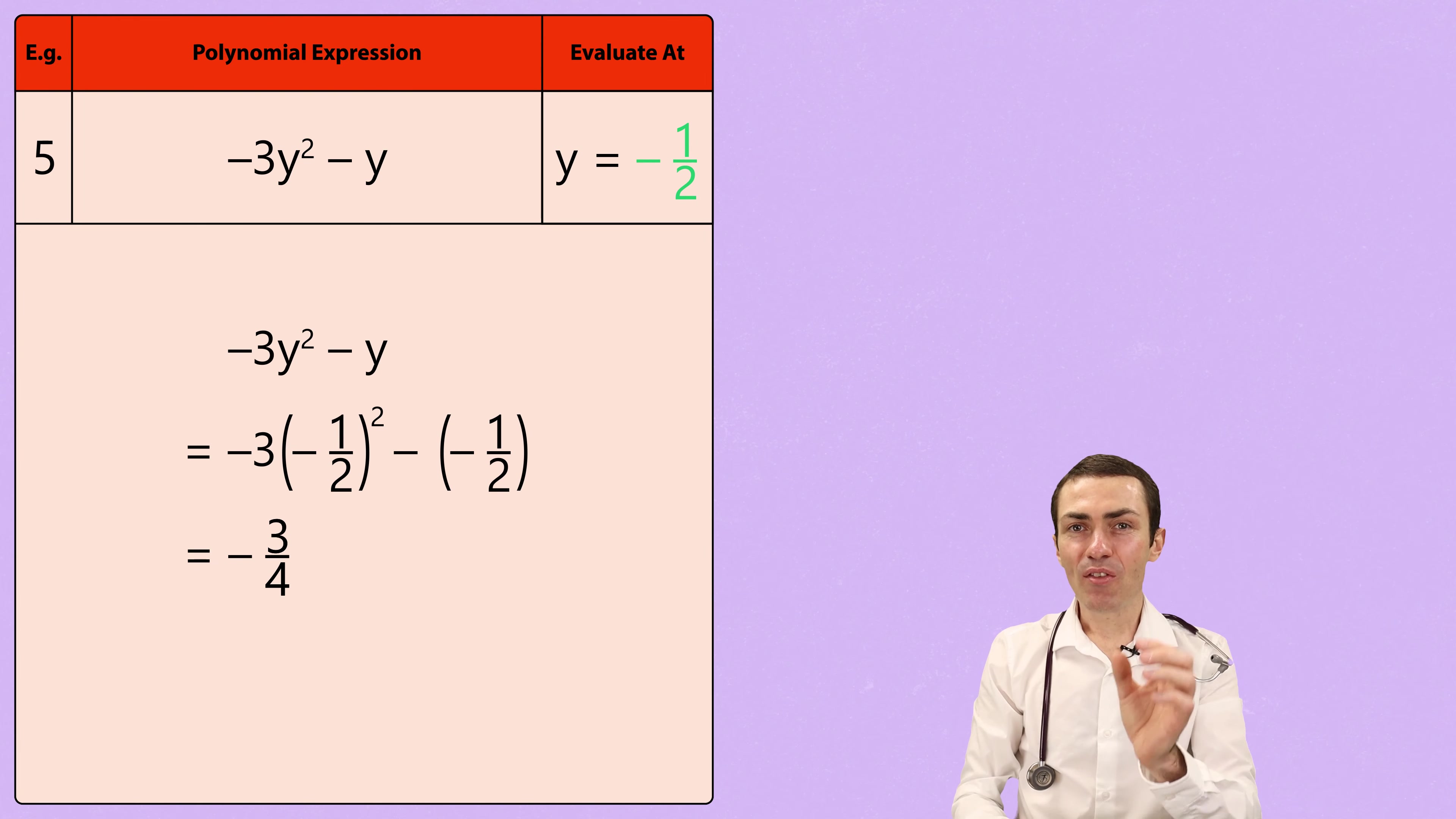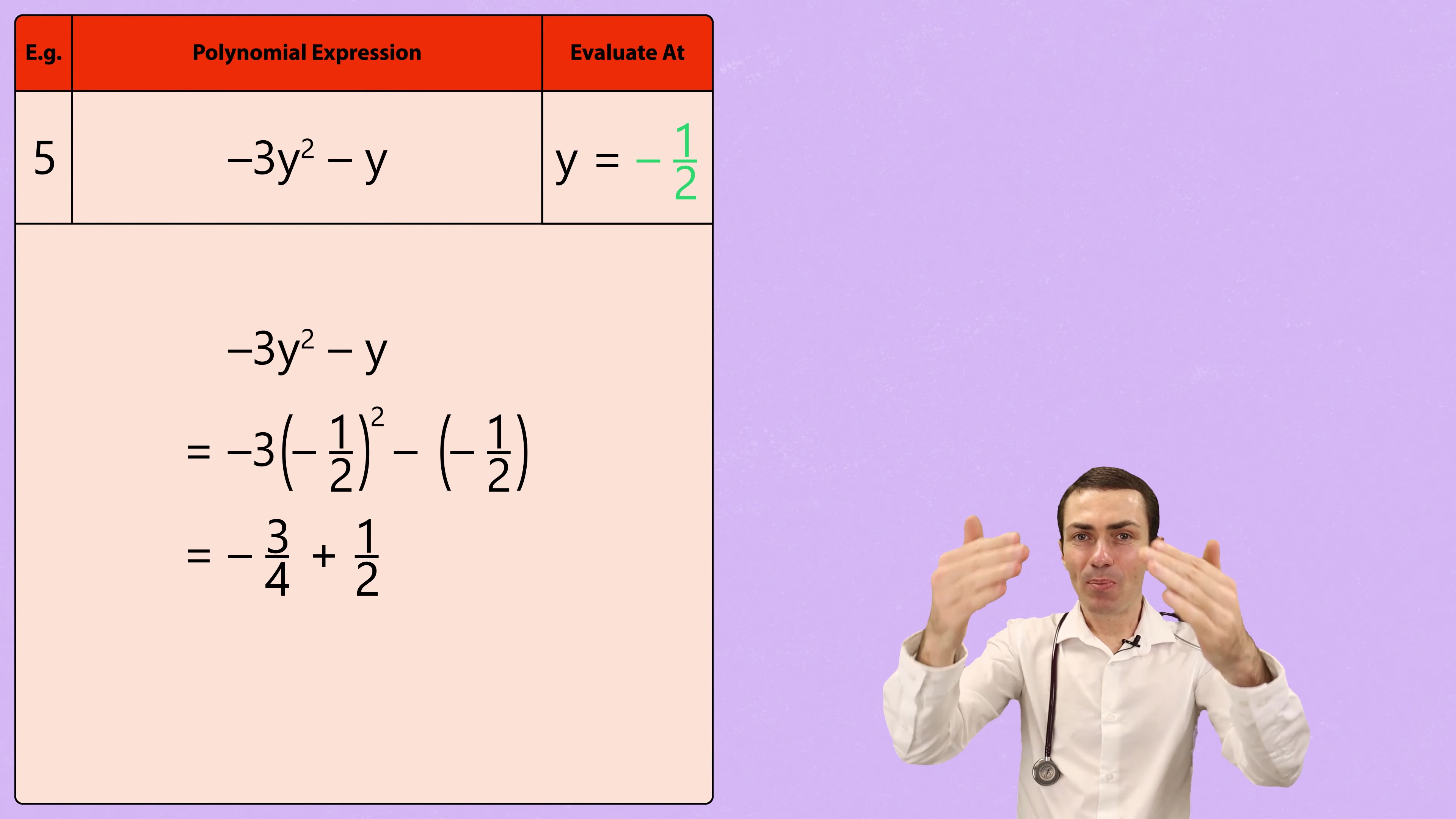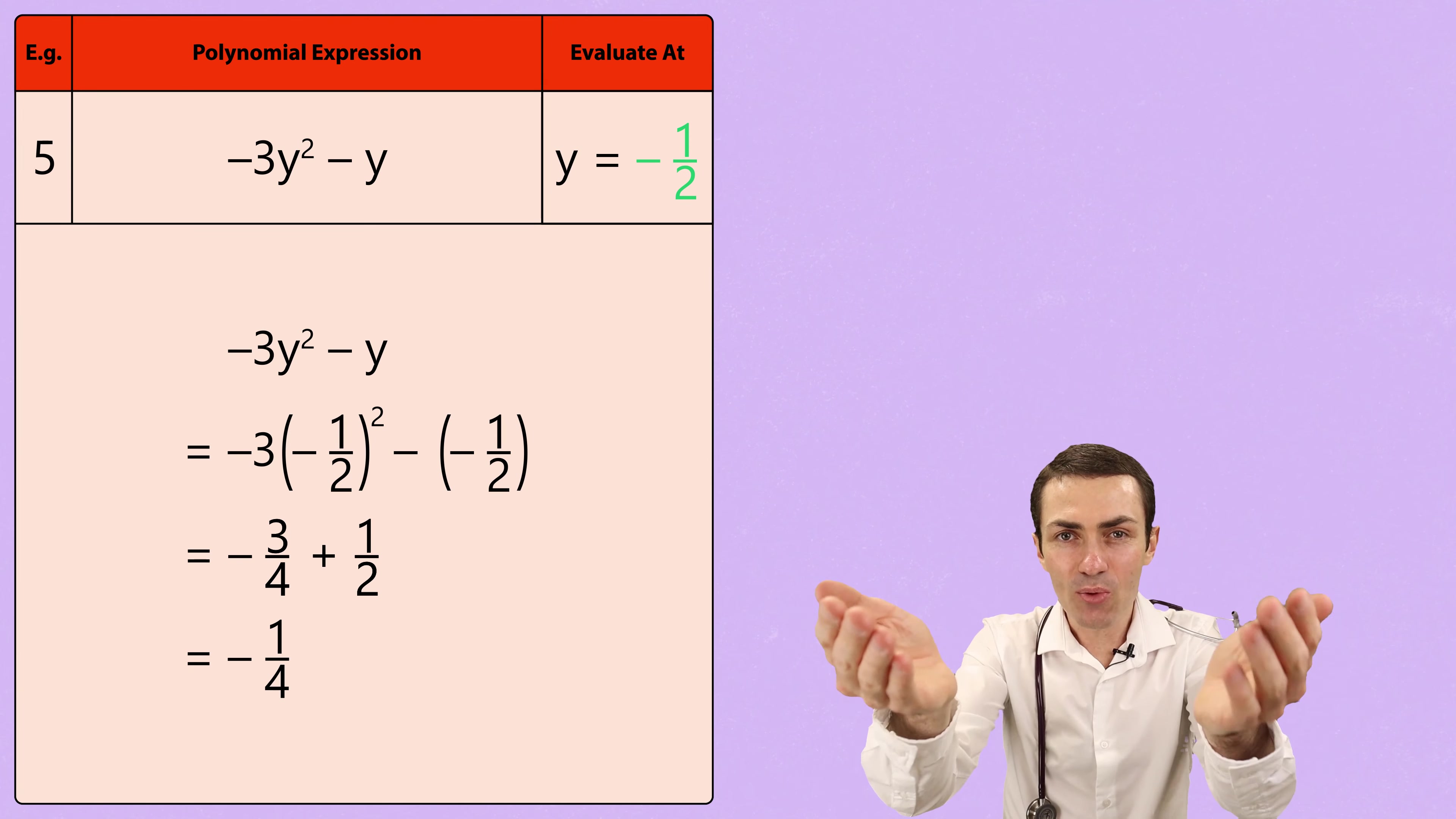And then, for the second term, we have minus negative 1 half. Now, a negative multiplied by a negative gives us a positive. So, that turns out to be positive 1 over 2. Finally, minus 3 over 4 plus 1 over 2 are different fractions that need to be brought to the same denominator. That just means the bottom of the fractions need to be the same before we can add them. Now, that's easy enough because for the second fraction, 1 over 2, we can rewrite that as 2 over 4 by simply multiplying the top and the bottom by 2. So, minus 3 over 4 plus 2 over 4 gives us an answer of negative 1 over 4.